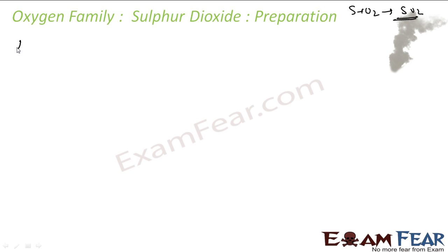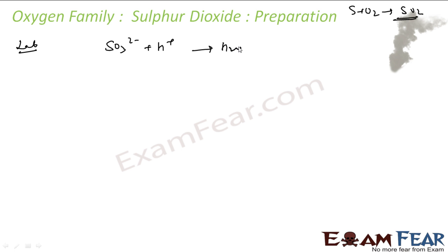In the lab, we can prepare Sulphur Dioxide by treating a sulphite with dilute Sulphuric Acid. We can treat the sulphite with any acid and we will get Sulphur Dioxide.